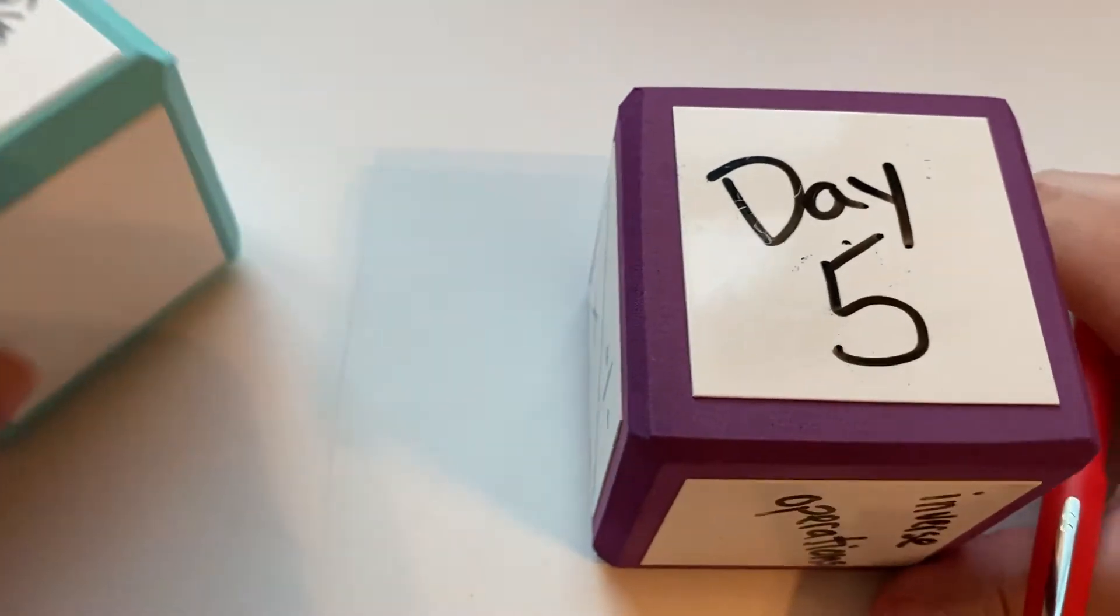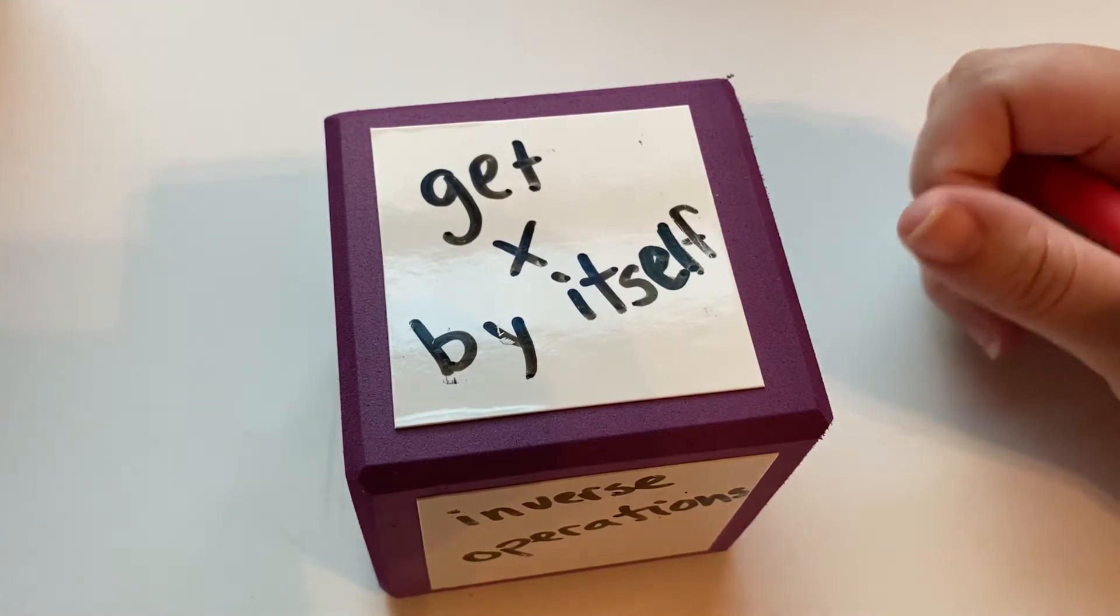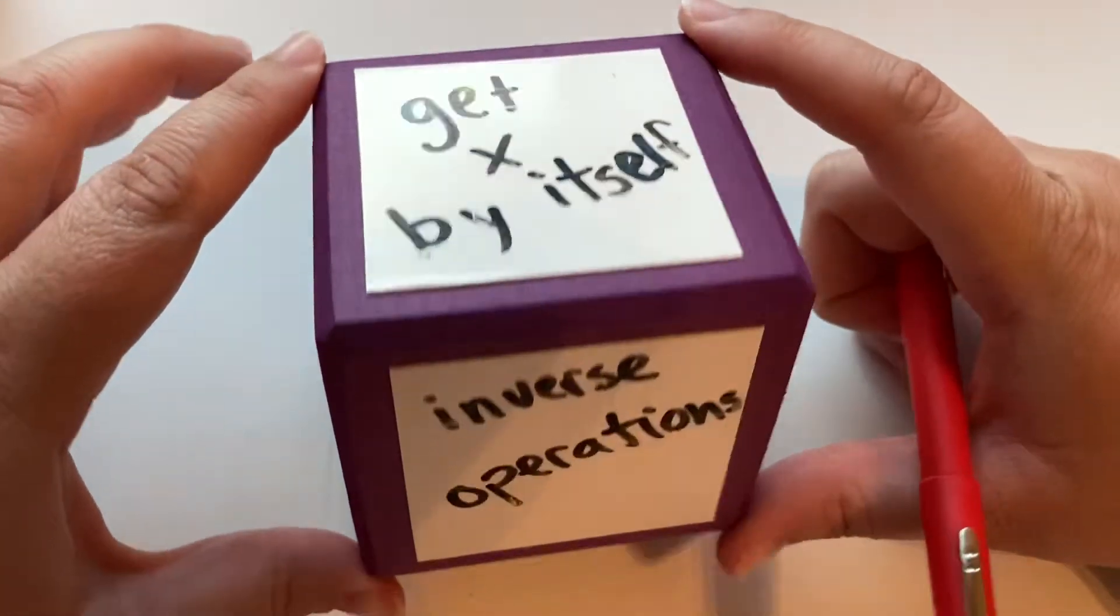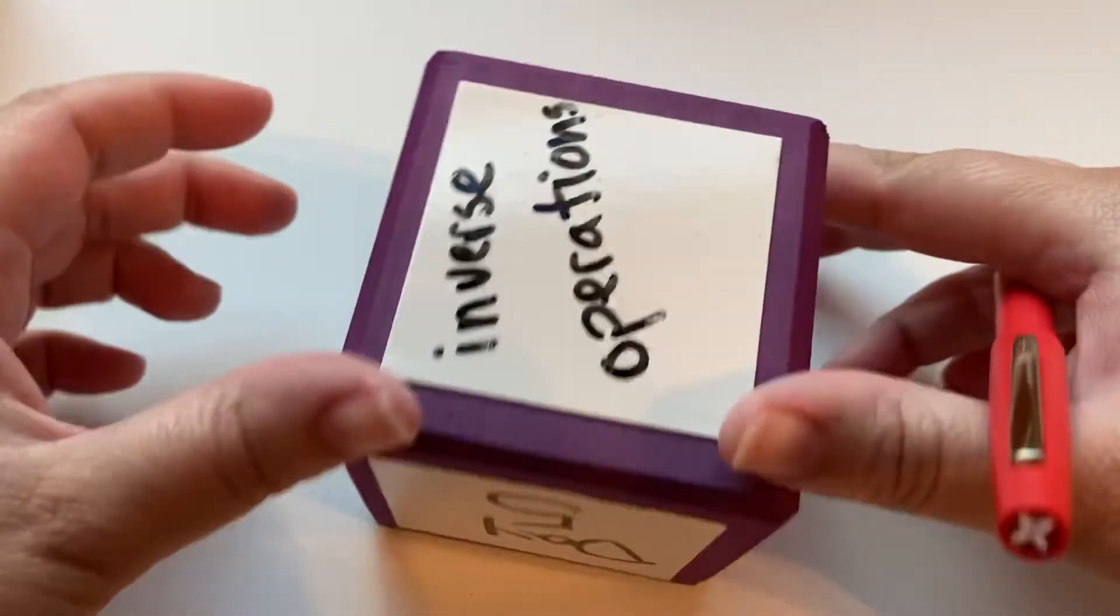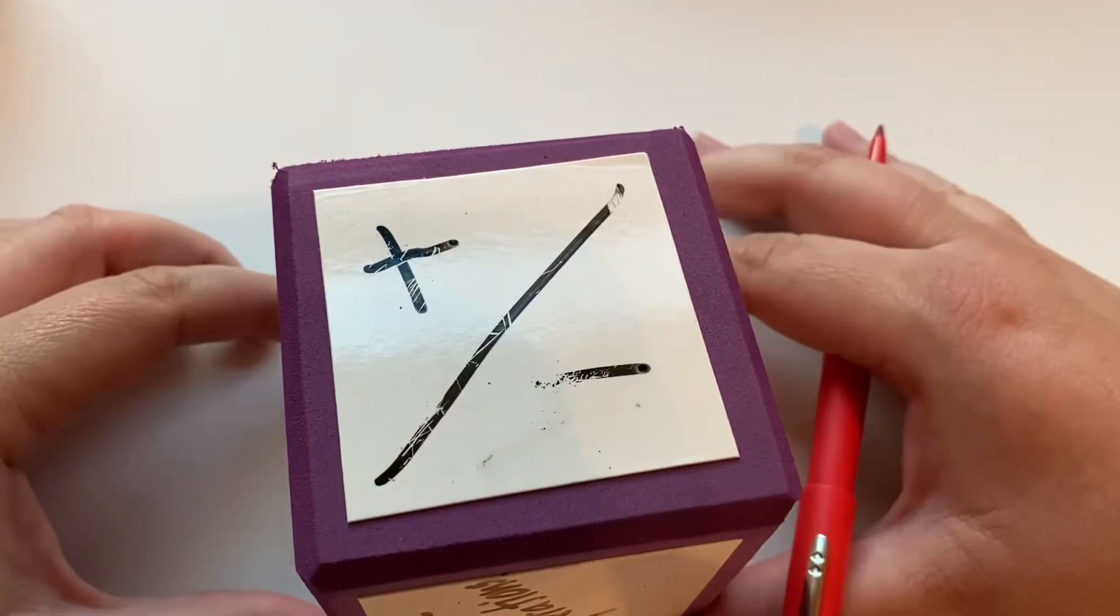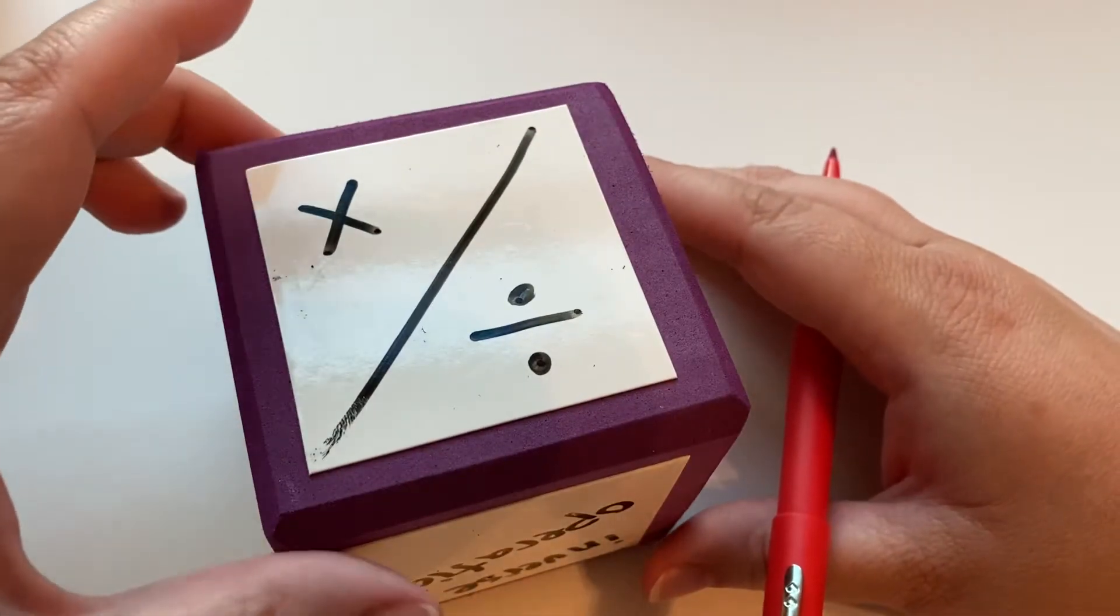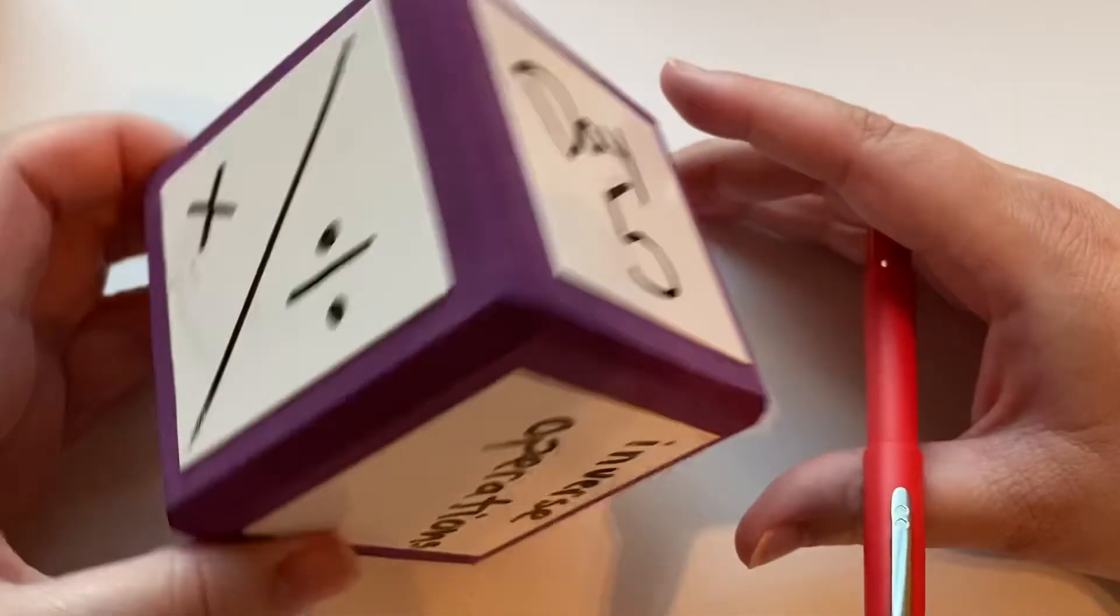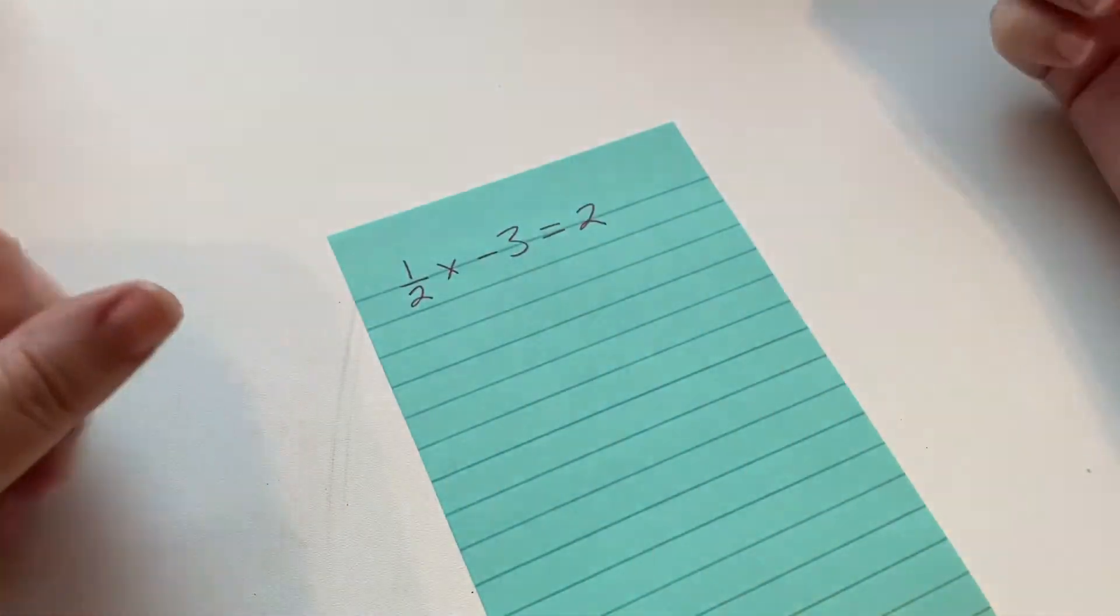Remember with equations we're still trying to get x by itself by eliminating terms using the inverse operation. The inverse operations are plus and minus, which are inverse operations of each other, and multiplying and dividing are inverse operations of each other as well. So let's look at an example of what we're talking about here.